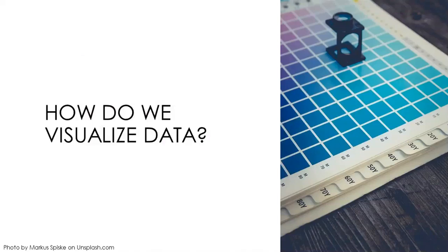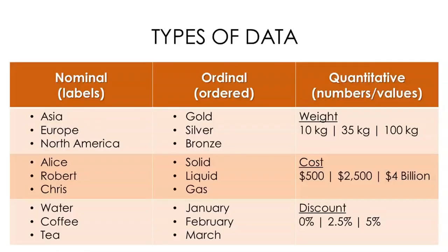How do we visualize data? Data visualization is essentially the practice of attaching visual attributes to data points. When we think about how best to represent data, we need to think about the type of data we're working with. Data is broken down into three broad categories. The first is nominal data — the labels we attach to things or the way we categorize things, as broad as the names of continents or as specific as the names of individual people. Nominal data can be compared with an equal to or not equal to relationship: either the points are the same or they're different. We can think of nominal data as being words and names.